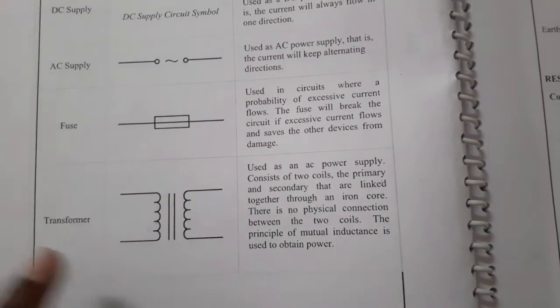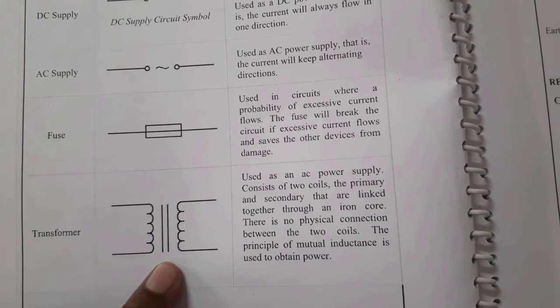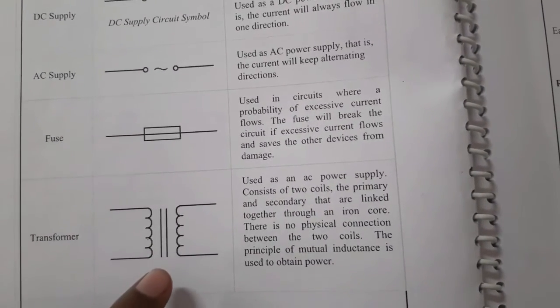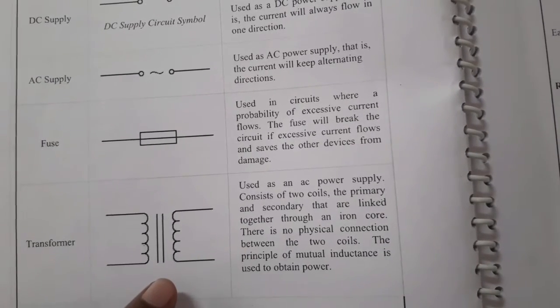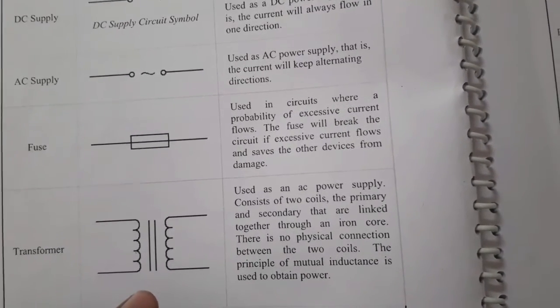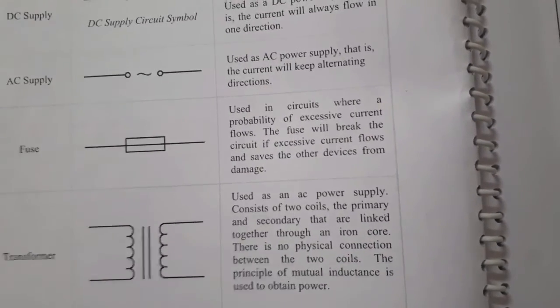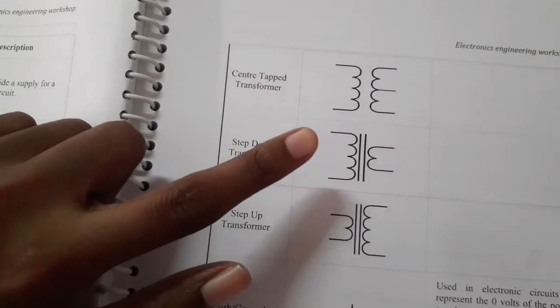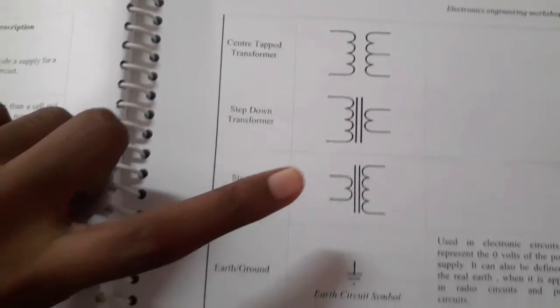Next is transformers. This is the symbol. Transformers are used in AC supply. They have a primary and secondary winding linked to each other with no physical connections, because they work on the principle of mutual inductance to obtain power. Transformer classifications include the center-tap transformer, step-down transformer, and step-up transformer.